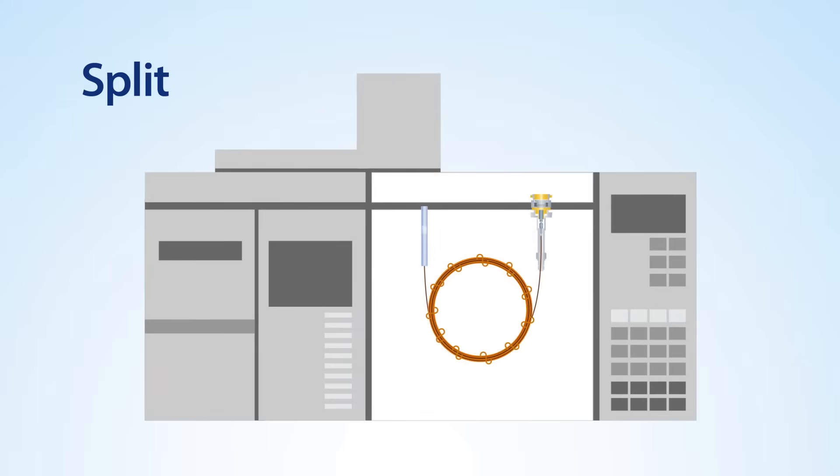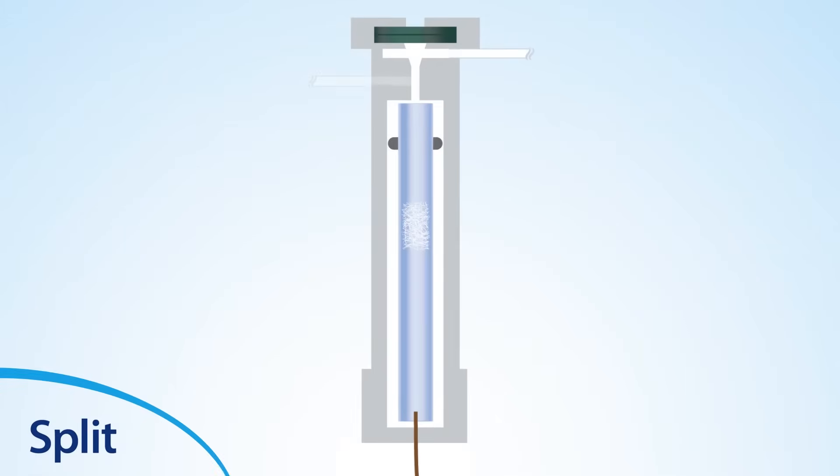We'll begin with split injection, which is the most popular thanks to its versatility over a range of analyses. Inside a split/splitless inlet, you will find the carrier gas supply, the septum, the septum purge, the split vent, the liner, and the column.